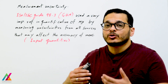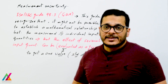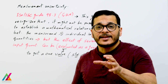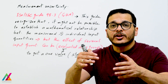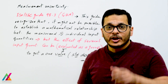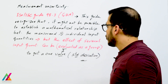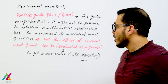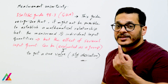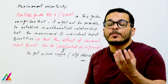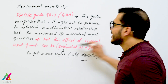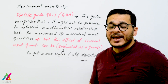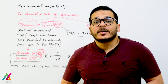This guide recognizes it might not be possible to establish a mathematical relationship between the analyte and every individual input quantity. However, after identifying all input quantities, you calculate the uncertainty from each source, and the effects of several input quantities can be evaluated as a group. These are then combined together to get one overall value — a parameter such as standard deviation from repeatability or reproducibility — which is added to the final result.